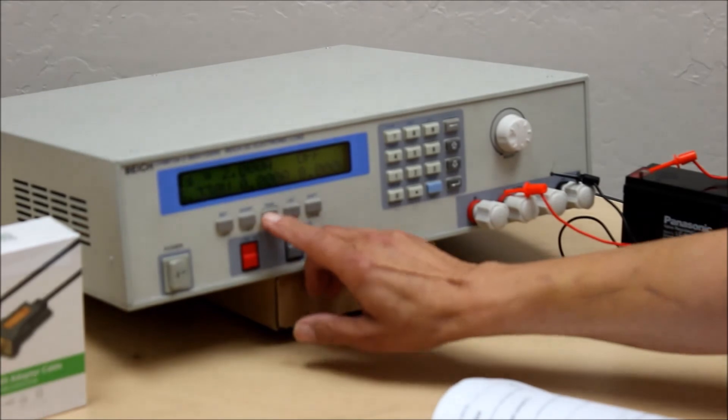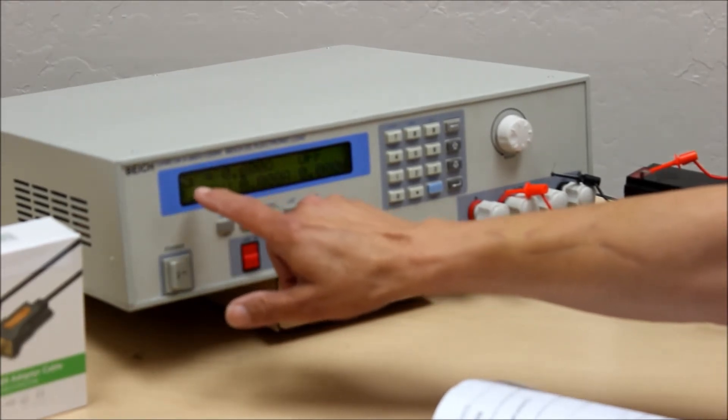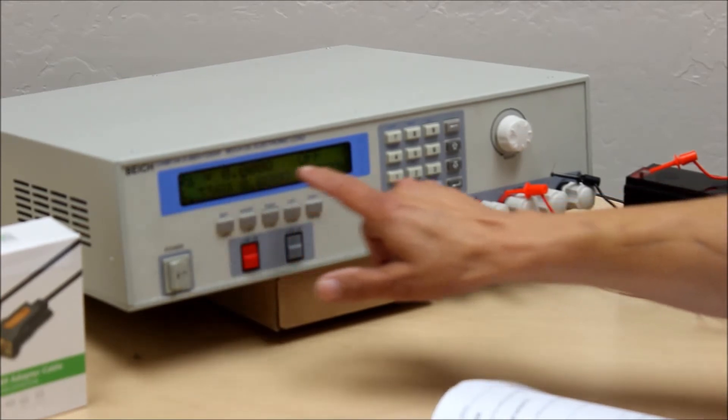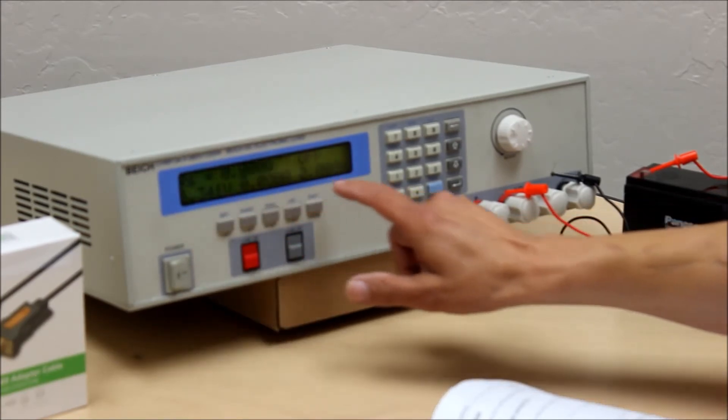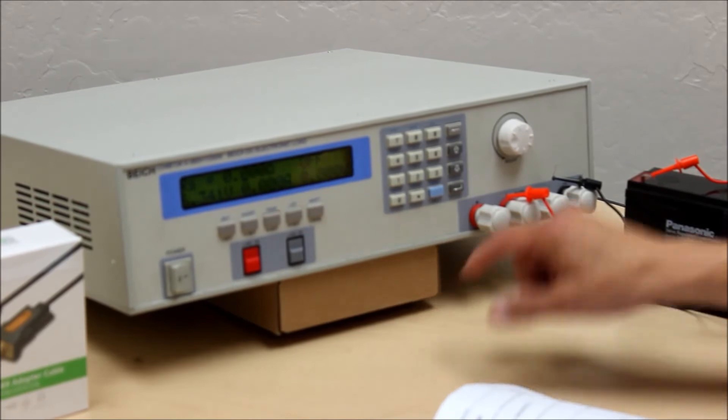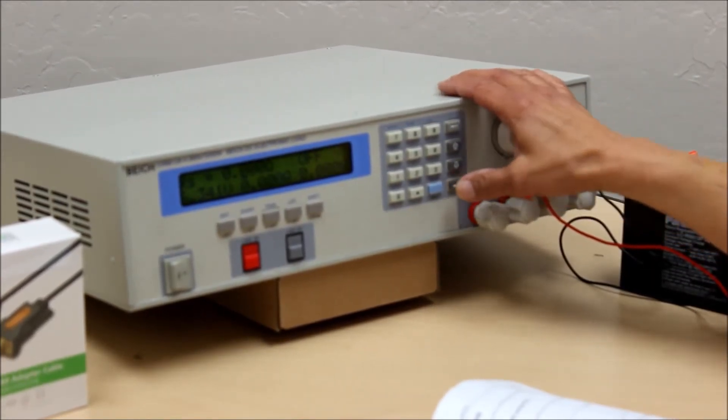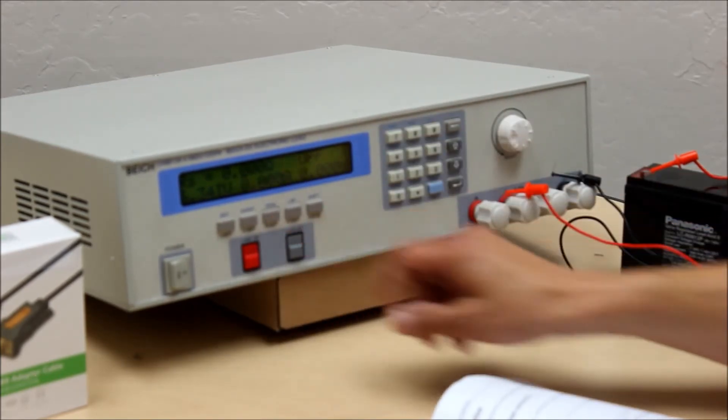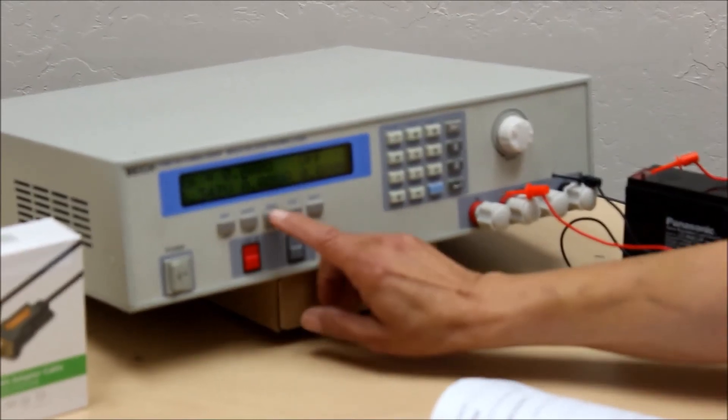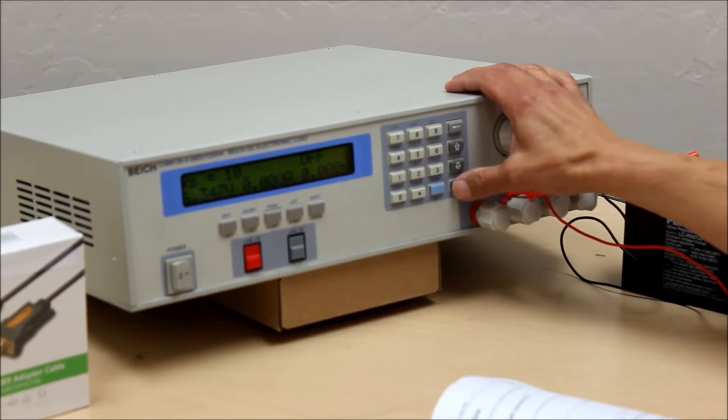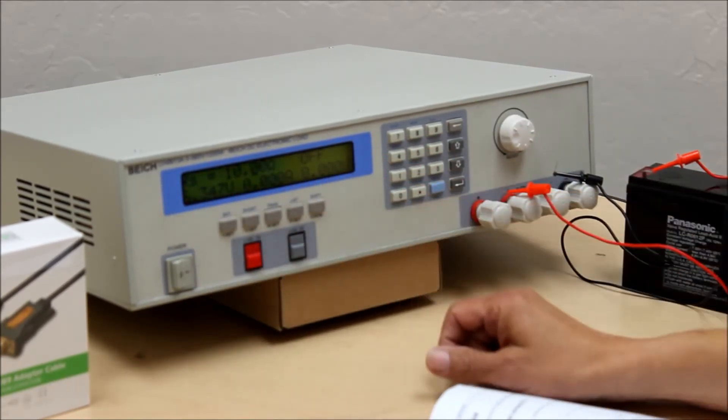So we're going to go into the constant resistance mode. Notice I hit the RSET button. We now come up with a screen to list the resistance value. Again it still has the same parameters on the bottom, the voltage, the current and the power. So now I'm able to go ahead and enter in the different values. So I'll go ahead and program in a value of resistance and just for grins I'll go ahead and program in 10 ohms. So now notice our screen did change to 10 ohms. Again these things haven't changed because I still have the load off.